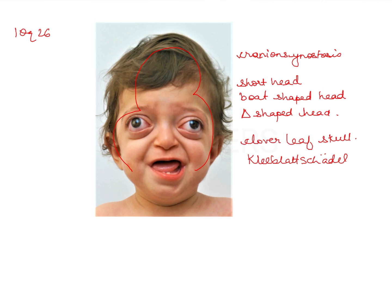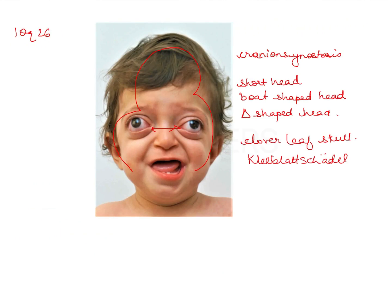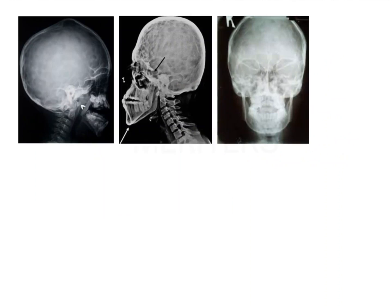The orbits are shallow and there is hypertelorism, as indicated in the question. The question also talks about high palatal arch and narrow maxilla, which are the intraoral findings. The radiographic assessment shows beaten metal appearance.